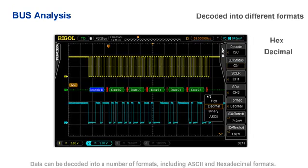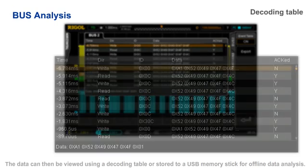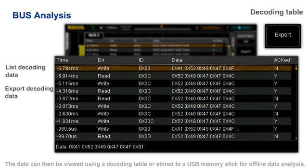Data can be decoded into a number of formats including ASCII and hexadecimal. The data can then be viewed using a decoding table or stored onto a USB memory stick for offline data analysis.